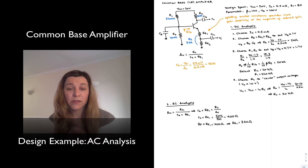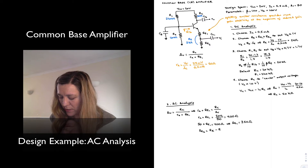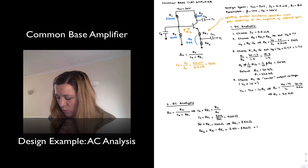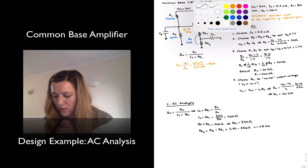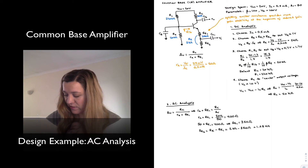Since the series combination of RE1 and RE2 equals the overall RE of 2 kΩ, we can now solve for RE2, which equals the overall RE minus RE1, or 2 kΩ minus 350 ohms, which is 1.65 kΩ. Splitting the resistors this way will give a gain of 50 for the circuit.